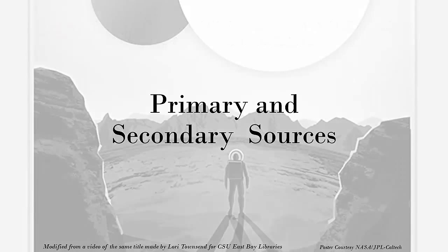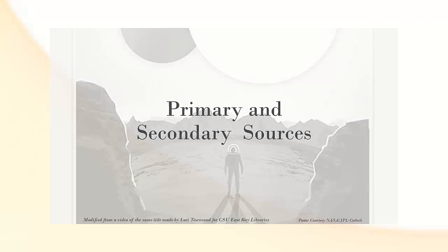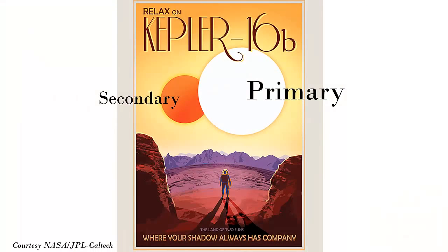In this video, we're going to discuss two types of information that are at the heart of academic research: primary and secondary sources. The difference between these two types of information, as well as how they overlap, can be more complex than it would seem at first glance, and their usage varies widely based on discipline.